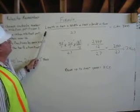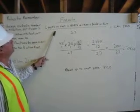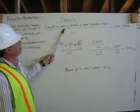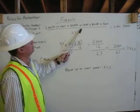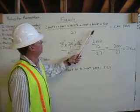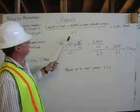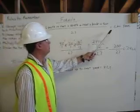This is how it works: length in feet, multiplied by width in feet, multiplied by height in feet, over 27. That gives us cubic yards.